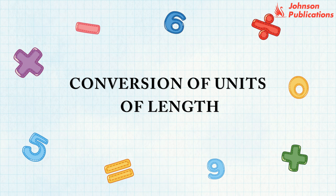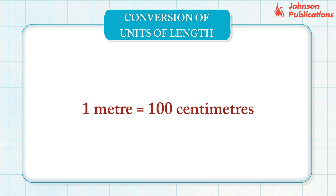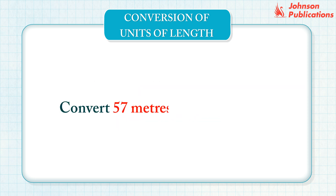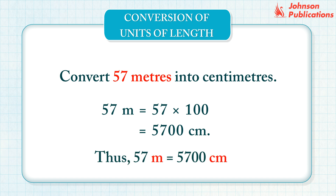Conversion of units of length. We know that one meter equals 100 centimeters. To convert meters into centimeters, multiply the meters by 100. Let us convert 57 meters into centimeters. Multiply 57 meters by 100. Thus, 57 meters equals 5,700 centimeters.